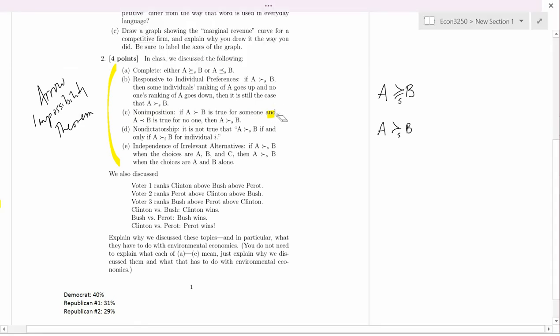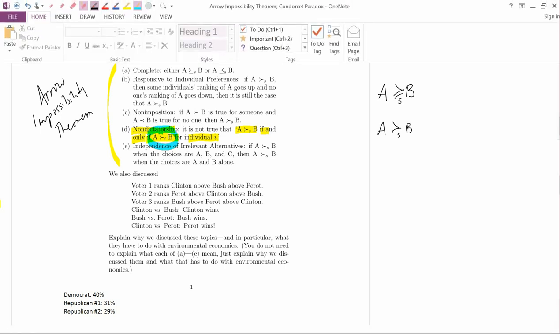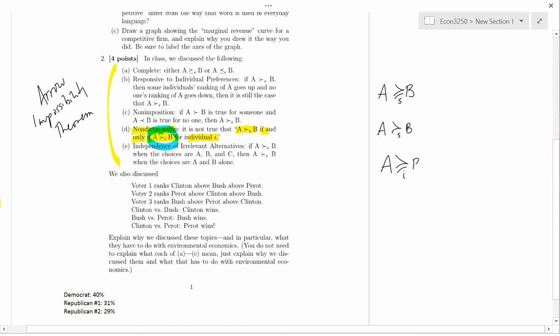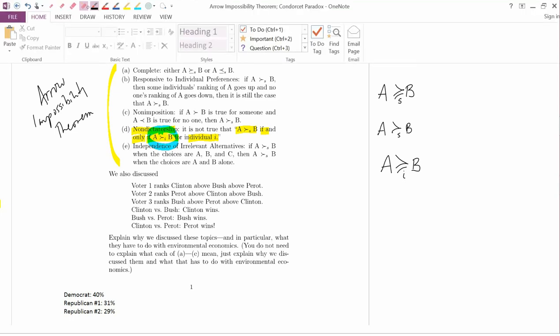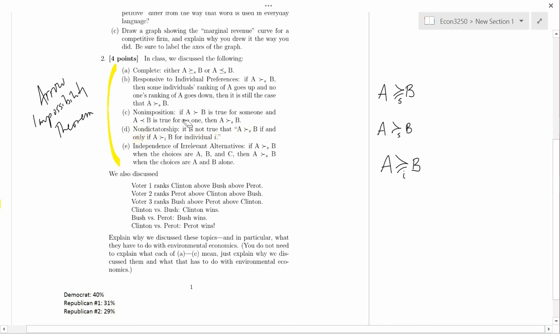Next one, non-dictatorship. The following is not true: that society picks A over B if and only if individual I picks A over B. I have a somewhat different symbol here. This symbol means person I is making the decision, not society S. This says person I prefers A to B. This is weak preference here. Person I weakly prefers A to B. What non-dictatorship says is society doesn't make the rule that says that person I is a dictator, and we're just going to do everything person I wants. Non-dictatorship seems to be a pretty weak requirement.